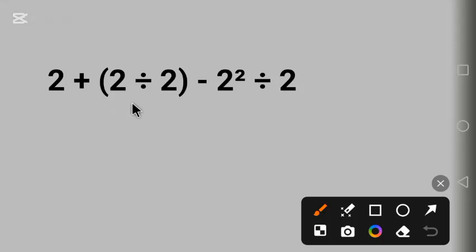of operation using PEMDAS. What is the meaning of P? P stands for parentheses, something like this, that is bracket. Is it in this question? Yes, so we begin with this. We'll bring down this 2 plus, 2 divided by 2 will give us 1 minus, we bring down this 2 square divide by 2.